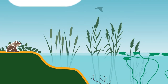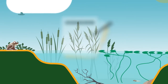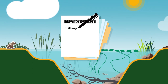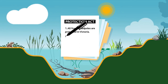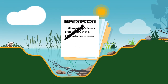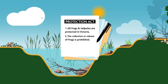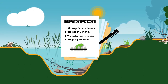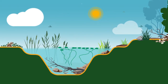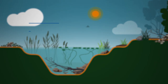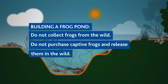We can all play a role in protecting tadpole habitats, helping them make the journey to adult frog. All frogs, tadpoles and frog spawn are protected in Victoria. The collection of frogs from the wild, or release of frogs to the wild, is prohibited under the Victorian Wildlife Regulations. These regulations encourage the protection of wild populations from illegal collection and introduction of disease and genetic contamination. If you have built your own frog pond, you will need to wait for frogs to naturally colonise it. You should not collect frogs from the wild or purchase captive frogs and release them in the wild.